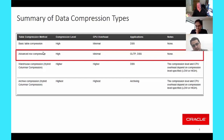A question that comes up is whether customers with compressed tables should look at changing percent free to reserve space and avoid row chaining, especially if they expect to do a lot of updates.